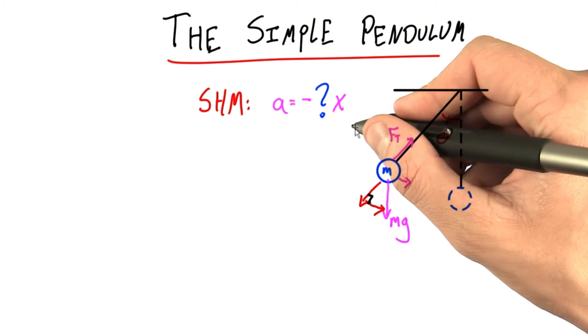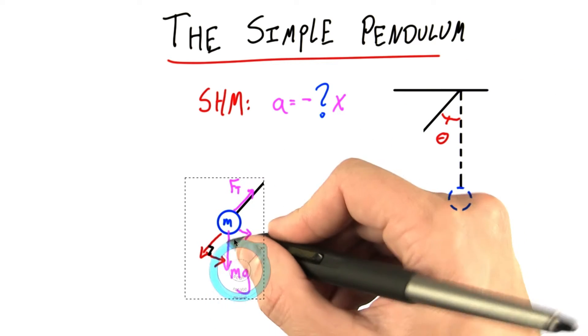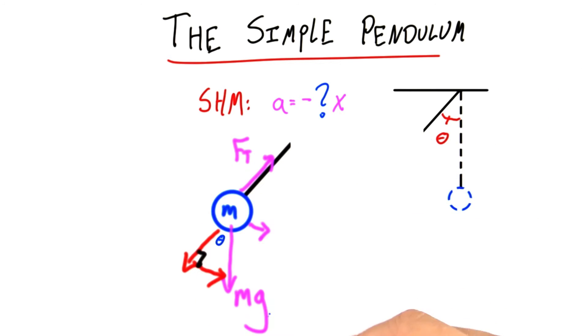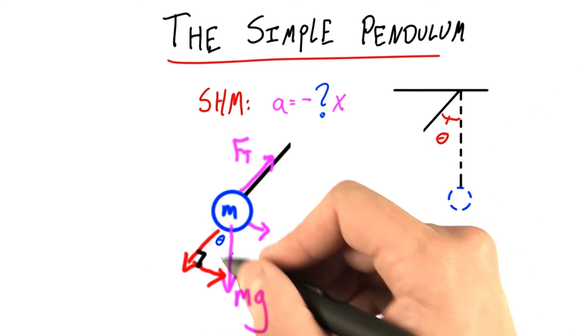This picture is starting to get a little cluttered, so let me pull it off to the side and make it a little bigger. I can see that this angle is the same as this angle was over here, and if that's the case, I can do my trig.